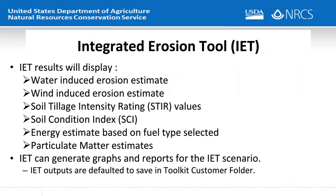IET is not just an erosion prediction tool. It gives the water and wind erosion estimates, but also provides the planner with the soil tillage intensity rating, or STIR value, and the soil conditioning index, or SCI. It also provides an energy estimate based on fuel type and use, and gives a particulate matter estimate from the dust created by wind erosion. IET can display graphically components of the erosion to aid the planner in identifying erosive periods and assist in explaining concerns to the client.